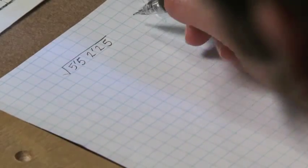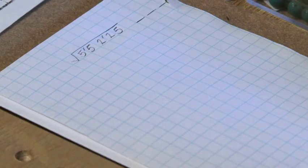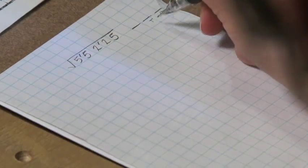So we can count one, two, three periods, which means we'll have three digits in our root. And those three digits are going to be units, tens, and hundreds.